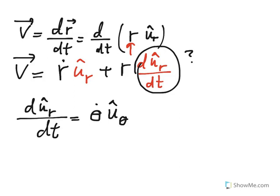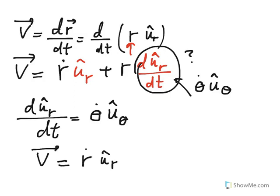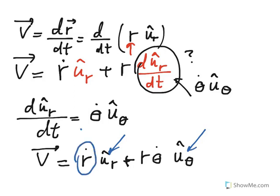Without going through the full detail, the derivative of the unit vector U sub R happens to be theta-dot times U sub theta. In other words, it has a magnitude of theta-dot and points in the transverse direction. Substituting this in, our velocity becomes R-dot times U sub R, plus R times theta-dot times U sub theta. So we have a radial component along U sub R and a transverse component along U sub theta.